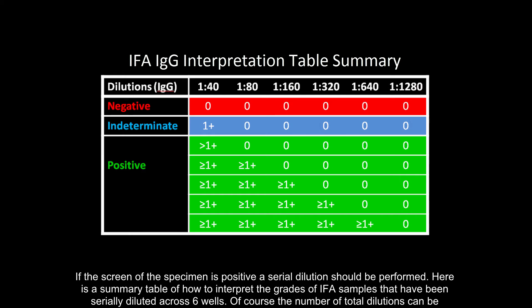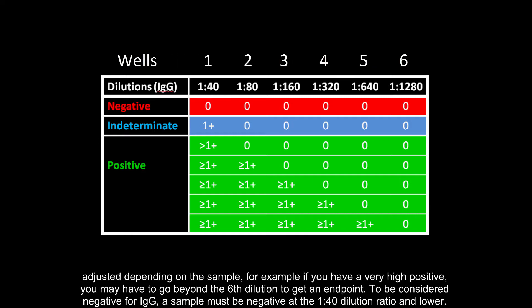Here is a summary table of how to interpret the grades of IFA samples that have been serially diluted across six wells. Of course, the number of total dilutions can be adjusted depending on the sample. For example, if you have a very high positive, you may have to go beyond the sixth dilution to get an endpoint.